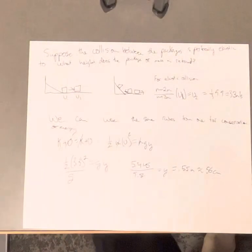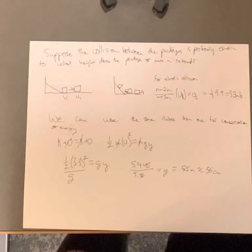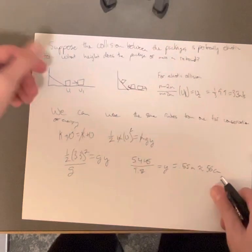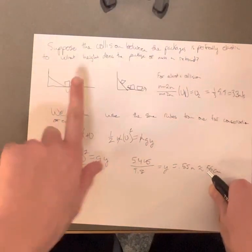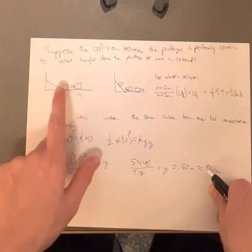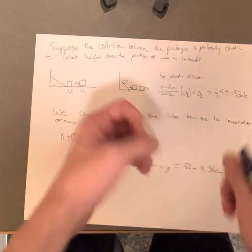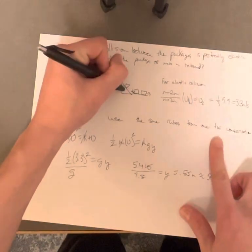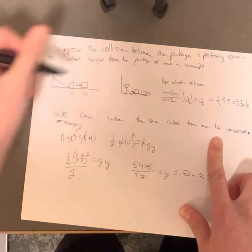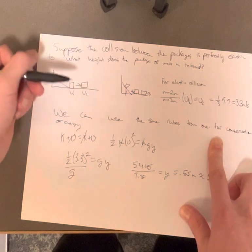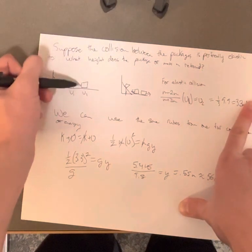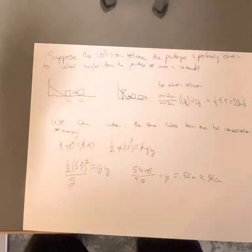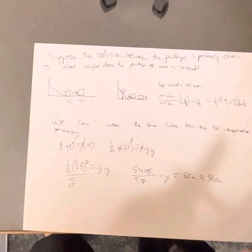For part B: suppose the collision between the packages is perfectly elastic — to what height does the package of mass M rebound? So we start with the velocity right when M hits the bottom. This time the package is not sticking together; it's going to bounce back and go up the hill, and we want to find how high it goes. The initial velocity of M coming in is 9.9 m/s, the 2M box is initially at rest, and then both will be moving in opposite directions.